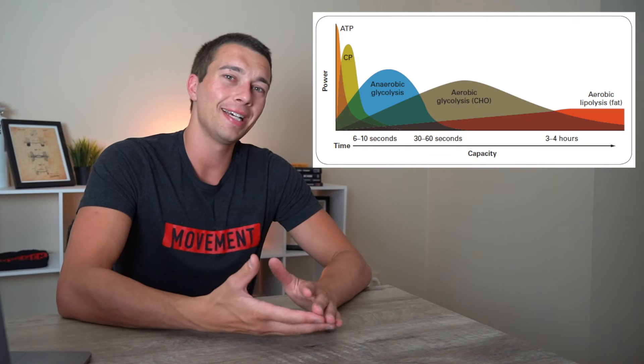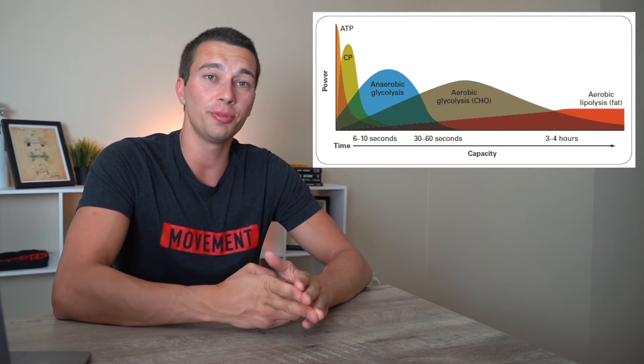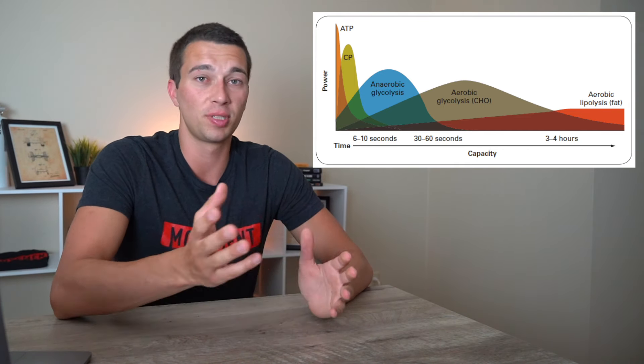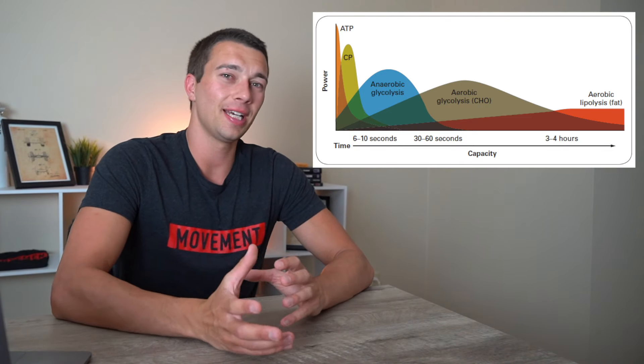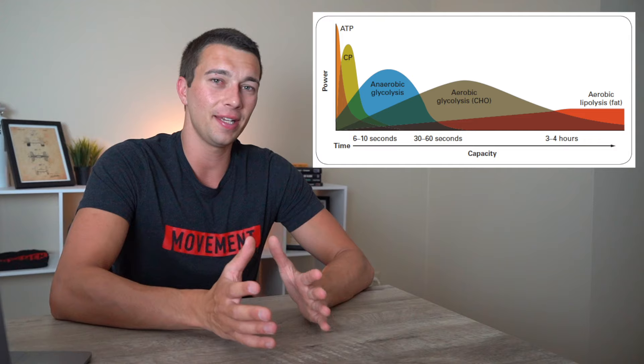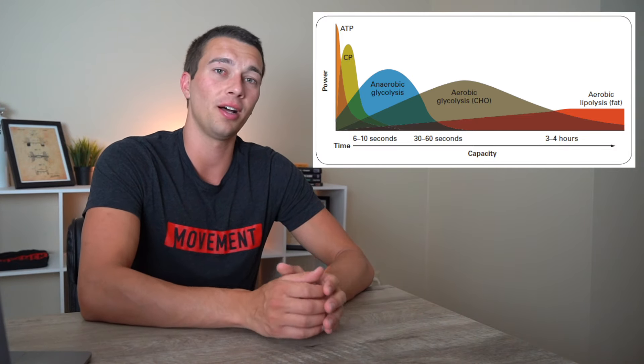So any high intensity effort that's taking that 10 to 12 seconds, whether that be pole vaulting, whether that be a 100 meter run, a sprint or a breakaway in hockey, a run to first base in baseball, any of these types of plays that are taking about that 10, 15 seconds are going to primarily use that anaerobic glycolysis system.